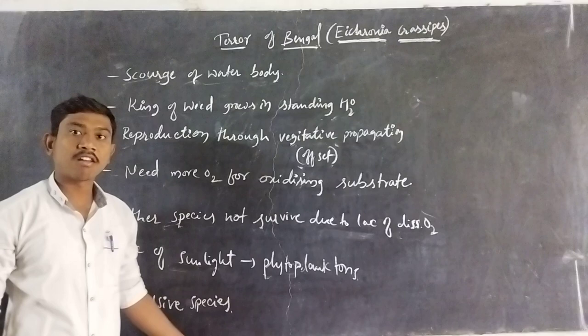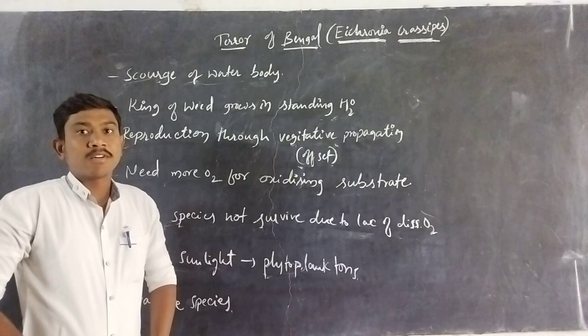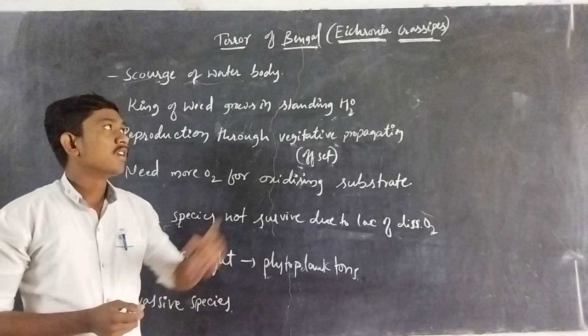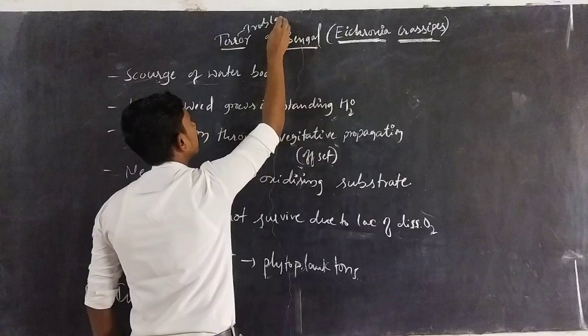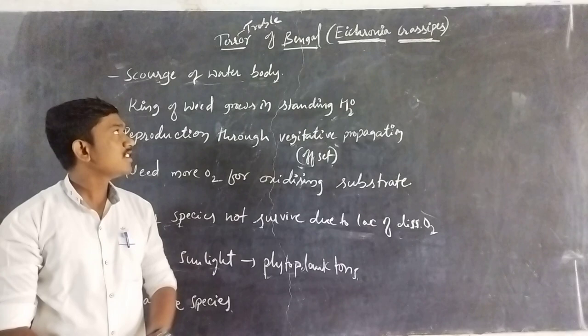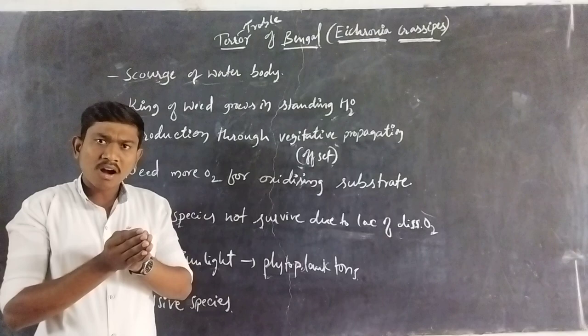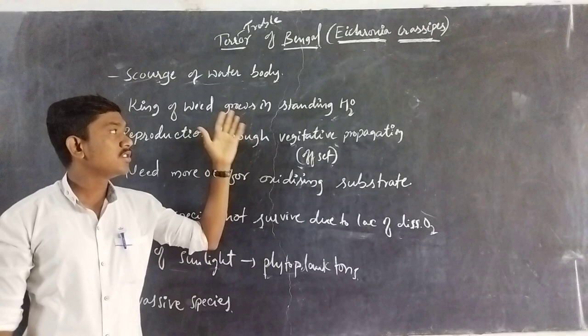So what is the meaning of the Terror of Bengal? There is a beautiful story behind the plant called Water Hyacinth, botanically known as Eichhornia crassipes. This plant was brought from another country and introduced first into the Bengal region because of its interesting and attractive characteristics.